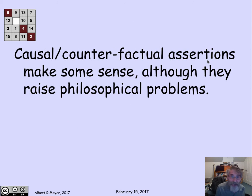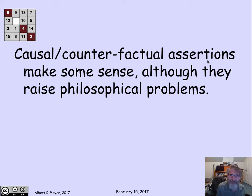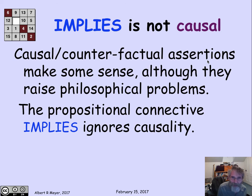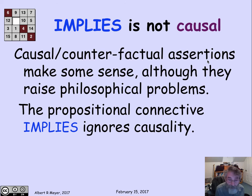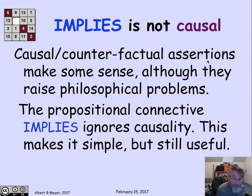So this kind of causal counterfactual assertion makes some sense, although it causes philosophical problems if you think carefully about reasoning contrary to fact. But the main thing is that the mathematical propositional connective implies ignores causality — it just doesn't have anything to do with that. The rules are: false implies false is true; false implies true is true. From false you can conclude anything, and the only way an implication can fail is if a true is implying a false. So this makes the mathematical implication very simple, but in fact it's still useful, as we'll see when we start making use of it.